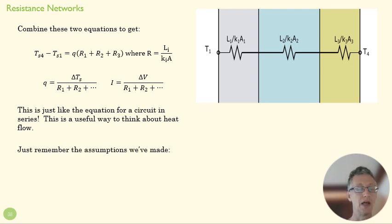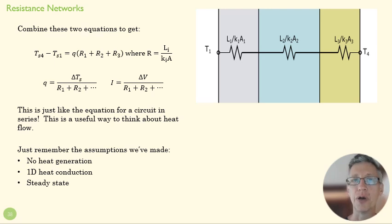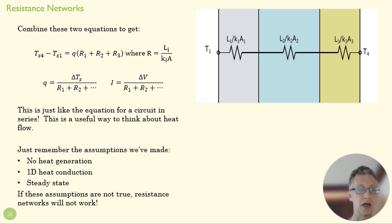Now, you have to remember what assumptions go into this resistance network before you use this sort of network thinking. You have to remember we don't have any heat generation here—in a circuit there's no parallel to having heat generation. This is only about 1D heat conduction where all of that flow is headed in one direction, and that has to be a steady state. We're not talking about what's going to happen if we change T1 or T4—we're thinking about over a long period of time what's going to be the heat flow through these surfaces. And if one of those assumptions is not true, we can't use this network type thinking.